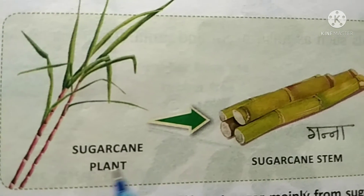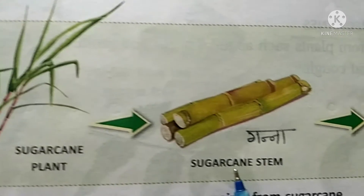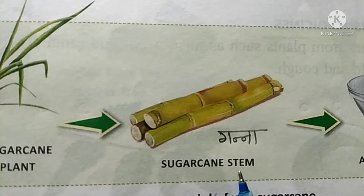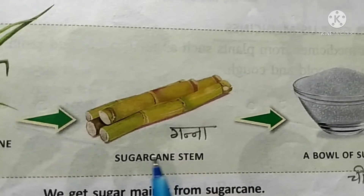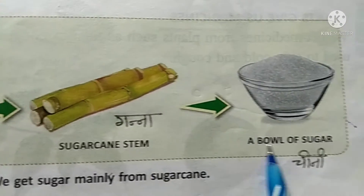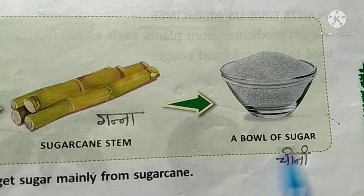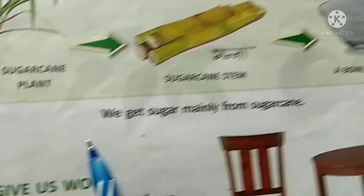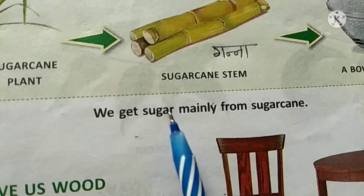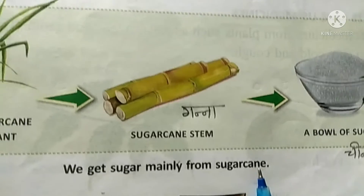Sugar cane plant. इससे हमें क्या मिलते हैं? Sugar cane stem, जिसे हम गन्ना कहते हैं. और इससे हमें क्या प्राप्त होते हैं? Sugar, जिसे चीनी भी कहते हैं. We get sugar mainly from sugar cane.